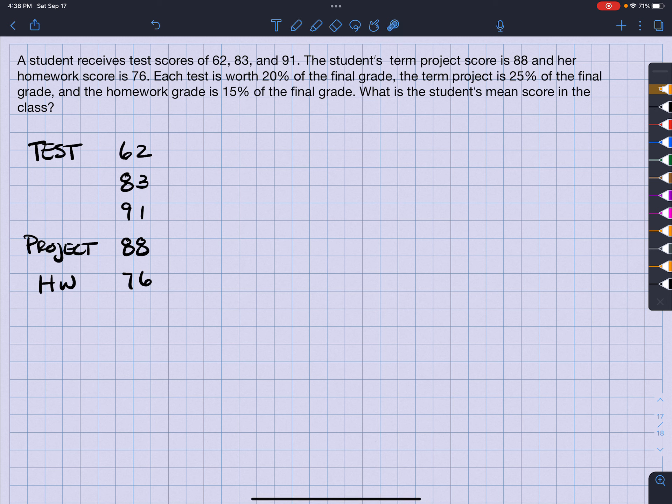So it says that each test is worth 20%. So this exam here is worth 20%, 20%, and 20%. The term project is 25%. So this term project is 25% of the final grade, and the homework grade is 15%.